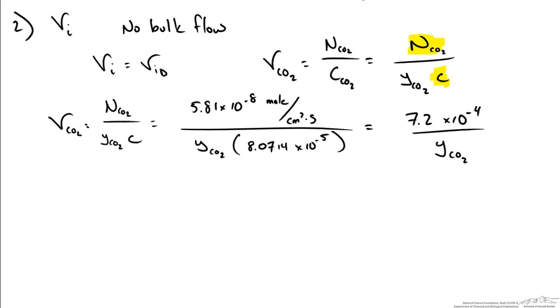Again because no bulk flow nothing else changes. We also know that the velocity of nitrogen is going to have the same equation except over the mole fraction of nitrogen. You can see that the velocity does depend on the mole fraction of the species. And that answers the second part of the question.